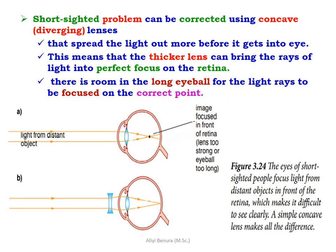Short-sightedness can be corrected using a concave or diverging lens that spreads the light out more before it enters the eye. This means the thicker lens can bring rays of light into perfect focus on the retina, as there is room in the long eyeball for light rays to be focused on the correct points.